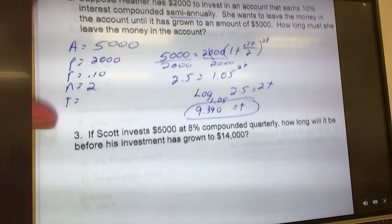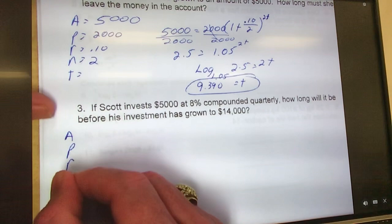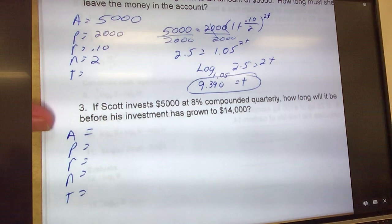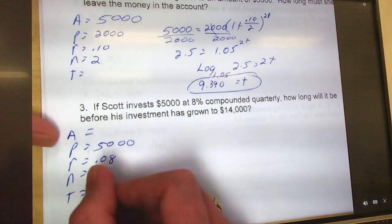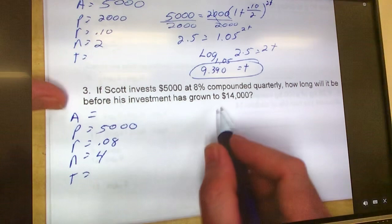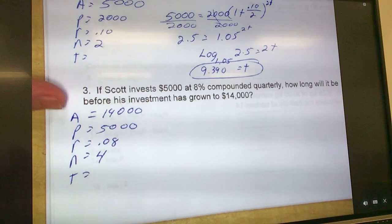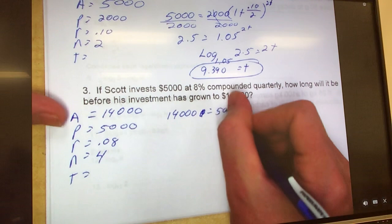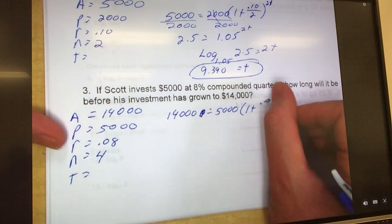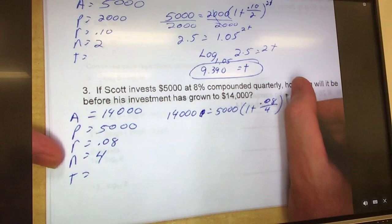Next one. A, P, R, N, T. So Scott invests $5,000, so that means he's putting that $5,000 in there right up front, so that's my P. At 8%, so that's 0.08, compounded quarterly. You already told me quarterly is 4. How long will it be in there before his investment grows to $14,000? So our final is $14,000. We don't know the time again, so we're doing exactly what we just did.